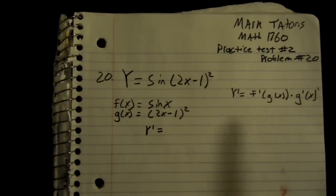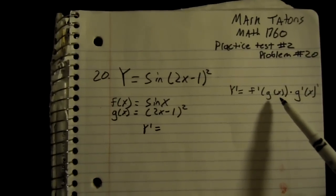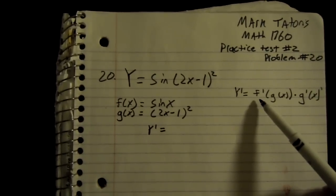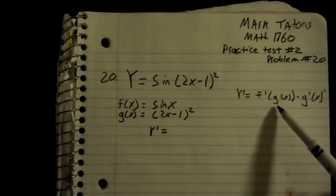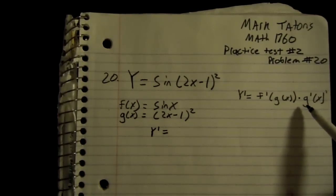In order to find the derivative, you have to use the chain rule. The chain rule is take the derivative of f times g of x times the derivative of g.